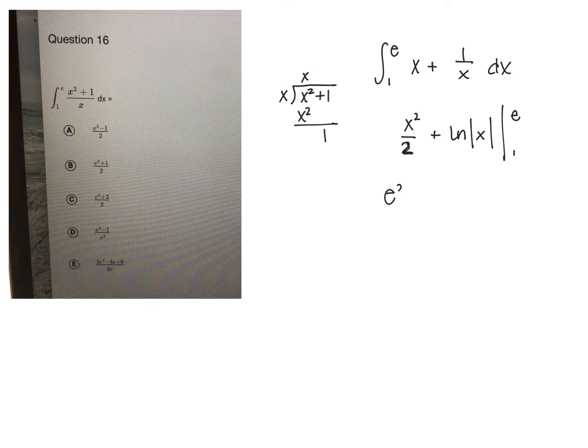So we would get e squared over 2 plus the natural log of the absolute value of e, minus 1 squared over 2, plus the natural log of the absolute value of 1.